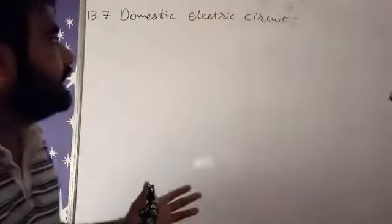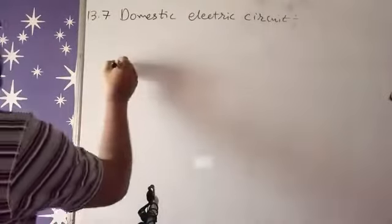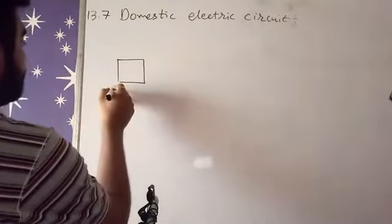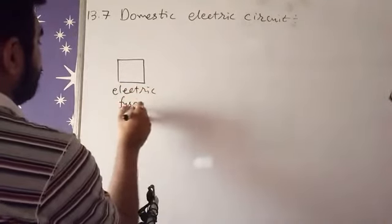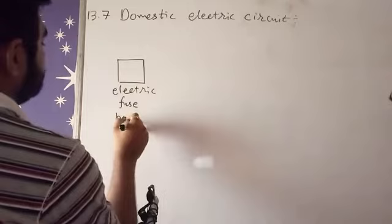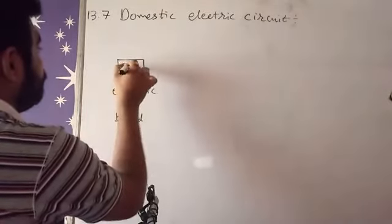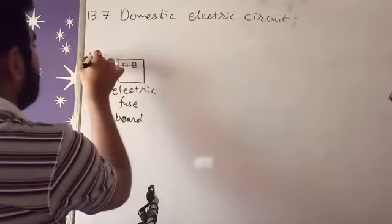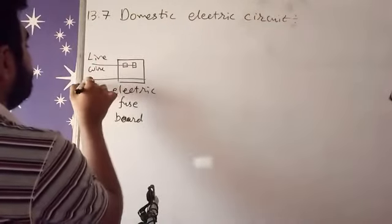Now, domestic electric circuit. First of all, we are having one electric fuse board having two terminals: first is live wire, second one is neutral wire.